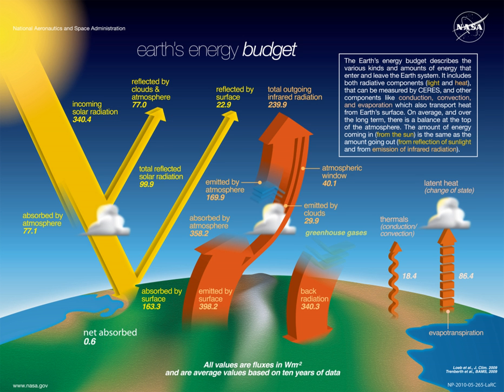Anything that increases or decreases the amount of incoming or outgoing energy will change global temperatures in response. However, Earth's energy balance and heat fluxes depend on many factors, such as atmospheric composition — mainly aerosols and greenhouse gases — the albedo of surface properties, cloud cover, and vegetation and land use patterns. Changes in surface temperature due to Earth's energy budget do not occur instantaneously, due to the inertia of the oceans and the cryosphere. The net heat flux is buffered primarily by becoming part of the ocean's heat content, until a new equilibrium state is established between radiative forcings and the climate response.